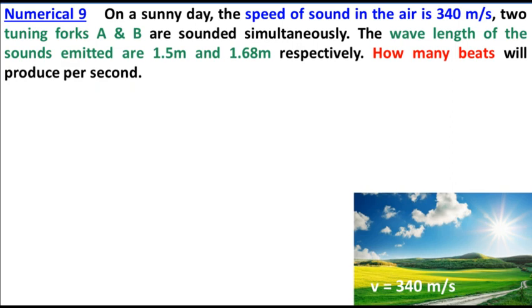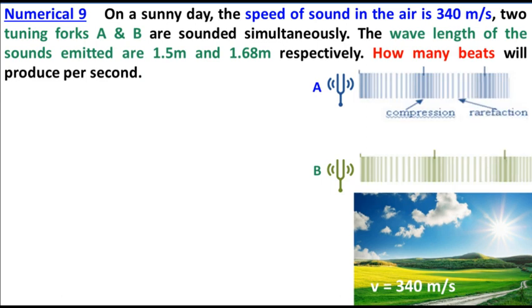Two tuning forks A and B are sounded simultaneously. The wavelength of the sounds emitted are 1.5 meters and 1.68 meters respectively. How many beats will be produced per second?